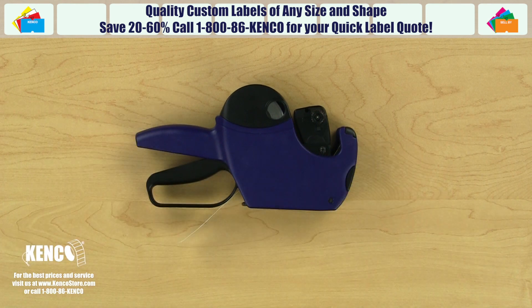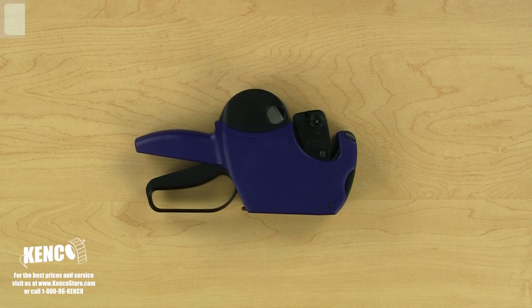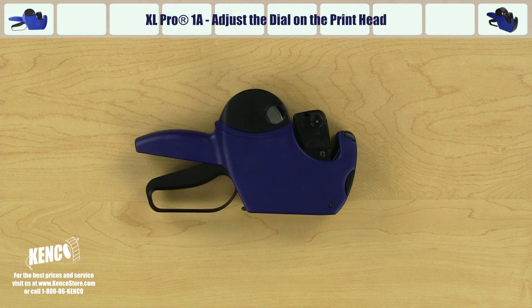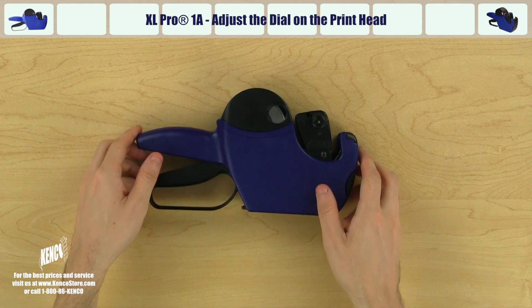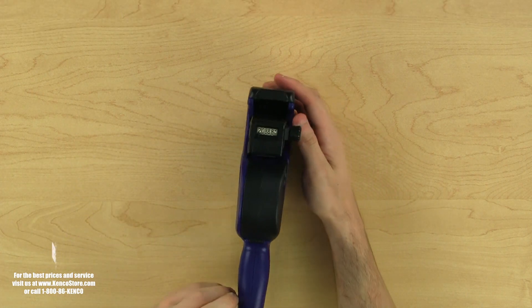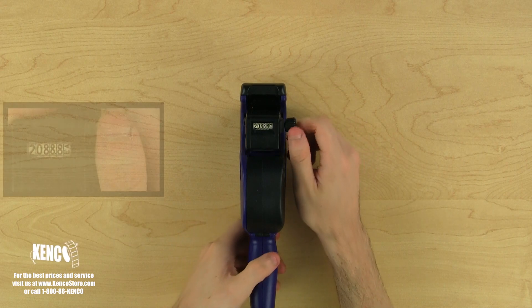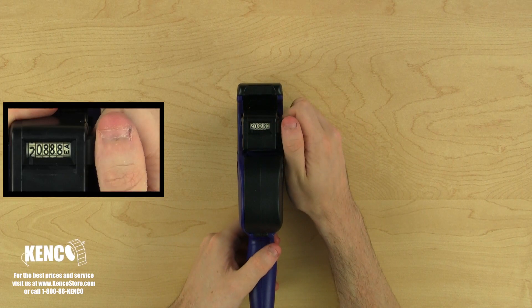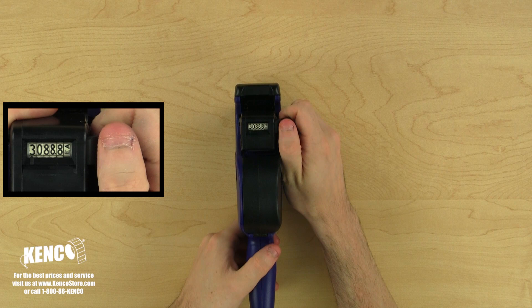Now that the gun is properly loaded, we'll learn how to adjust the price. I'm going to show you how to adjust the dial on the print head. With the top part of the gun facing you, we'll use our left hand to hold the gun and our right hand to grab the adjustment dial. Let's change the bands to our desired price by turning the adjustment dial.